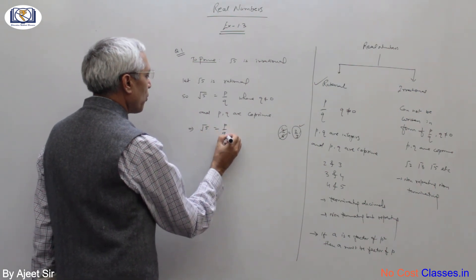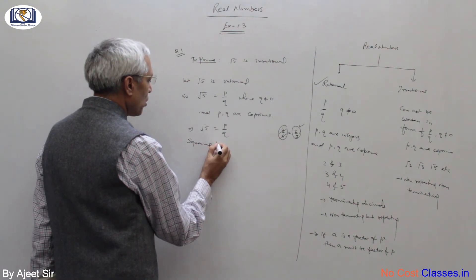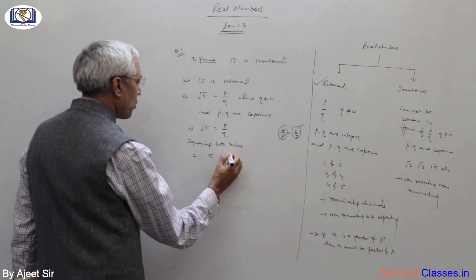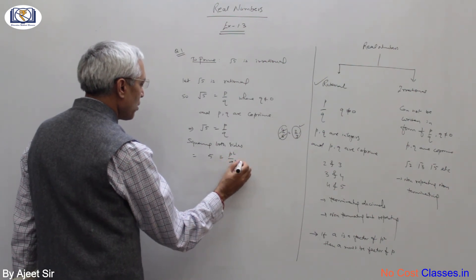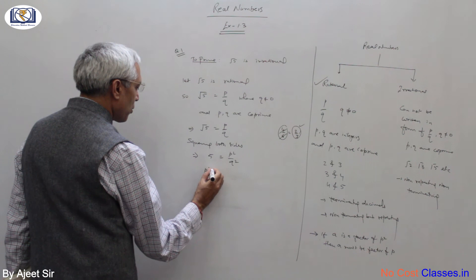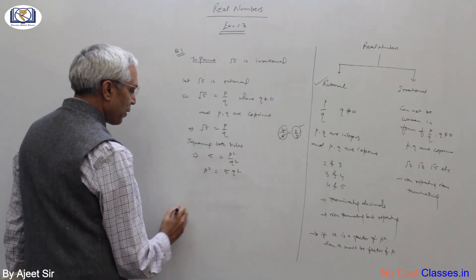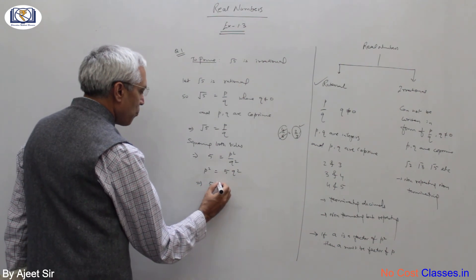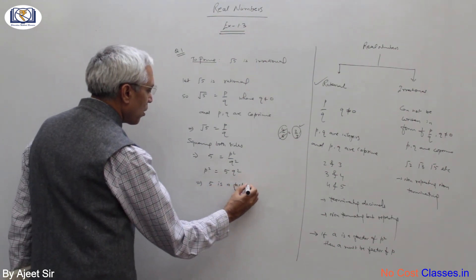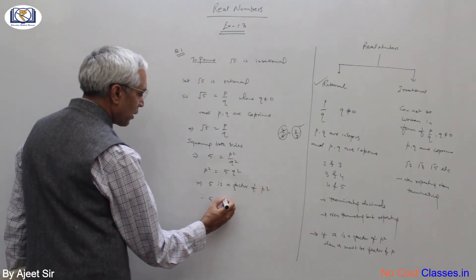Root 5 equals p upon q. Squaring both sides: 5 equals p squared by q squared. Cross-multiplying: p squared equals 5q squared. This implies 5 is a factor of p squared, and therefore 5 must be a factor of p.